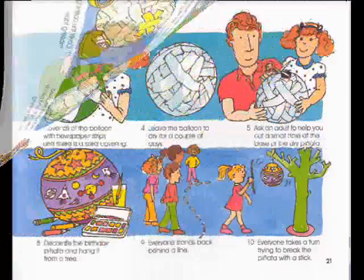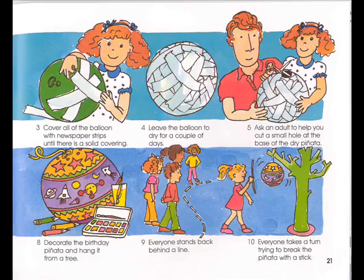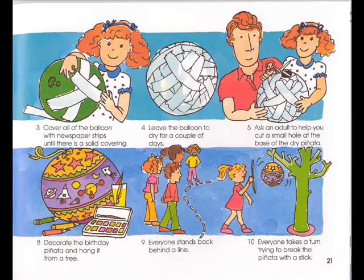What to do: Blow up the balloon and tie it tightly. Cut the newspaper into strips and cover with paste. Cover the balloon with the newspaper strips until there is a solid covering. Leave the balloon to dry for a couple of days. Ask an adult to help you cut a small hole at the base of the dry piñata. Push dried fruits, nuts, and candy into the opening. Cover the opening with masking tape. Decorate the piñata and hang it from a tree. Everyone stands back behind a line and takes a turn trying to break the piñata with a stick.